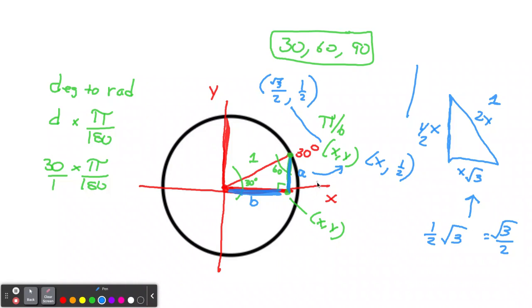In the next video, we're going to look at placing the 45-45-90 on the unit circle, and we'll put other degrees on the circle.